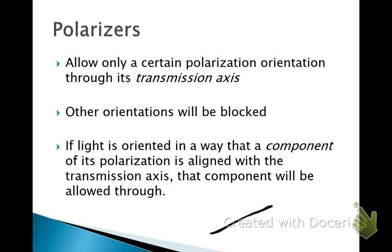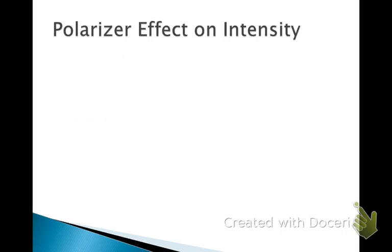If I've got light oscillating, let's say, to the right, up and to the right, or down and to the left, back and forth like that, and I try to send it through a vertical polarizer, then all I'll do is look at the vertical component of that motion. And that's the component that will be allowed through.